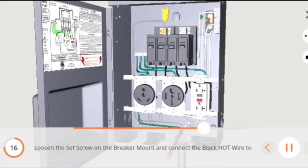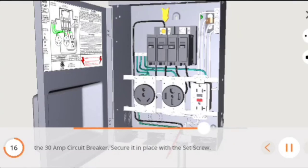Loosen the set screw on the breaker mount and connect the black hot wire to the 30 amp circuit breaker. Secure it in place with the set screw.